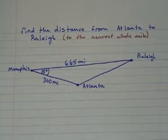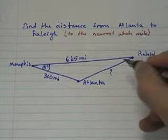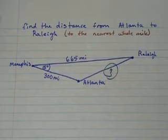So given this information, they want us to find the distance from Atlanta to Raleigh. We want to find this distance right here. This side. That's what we're interested in.